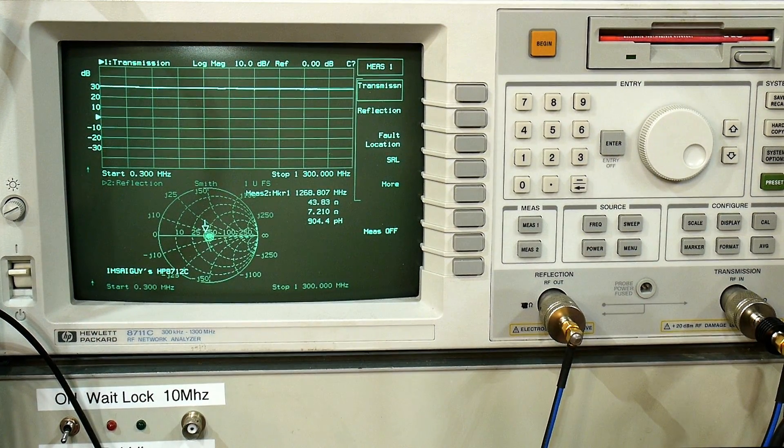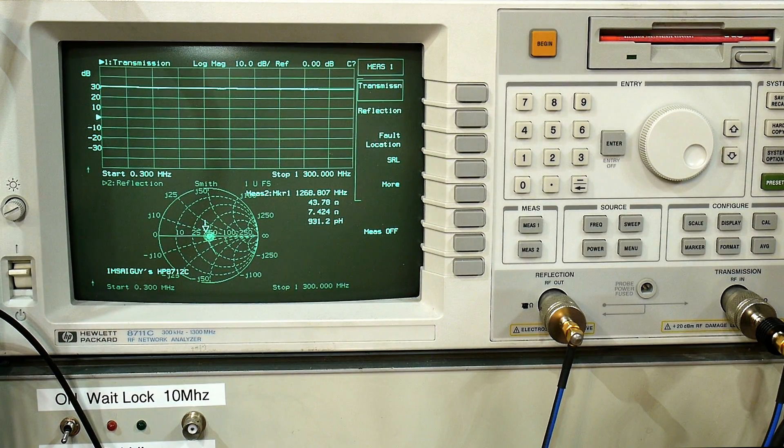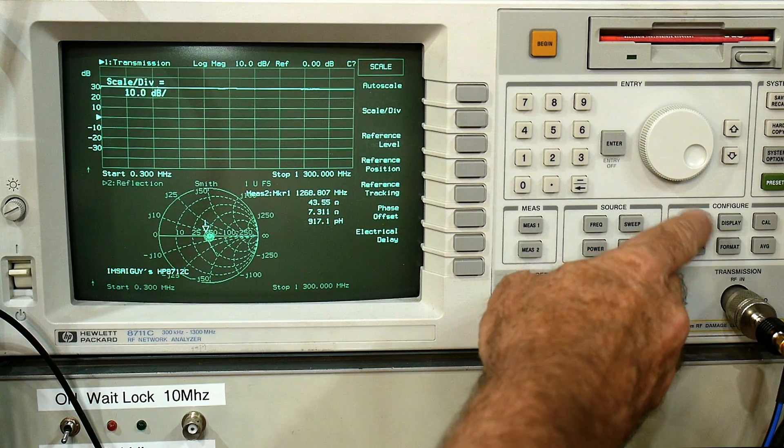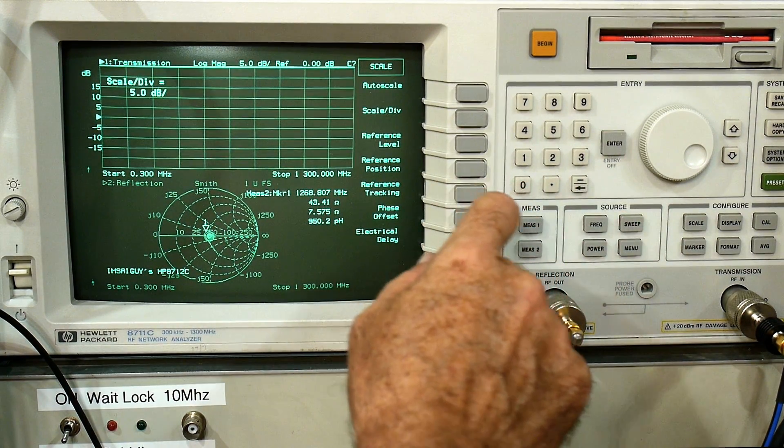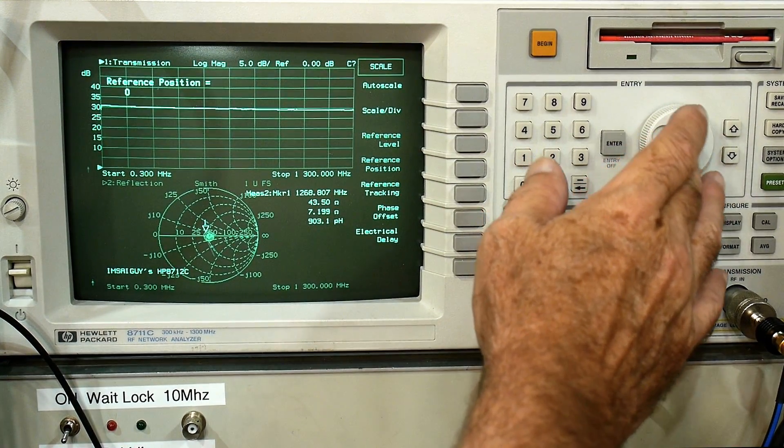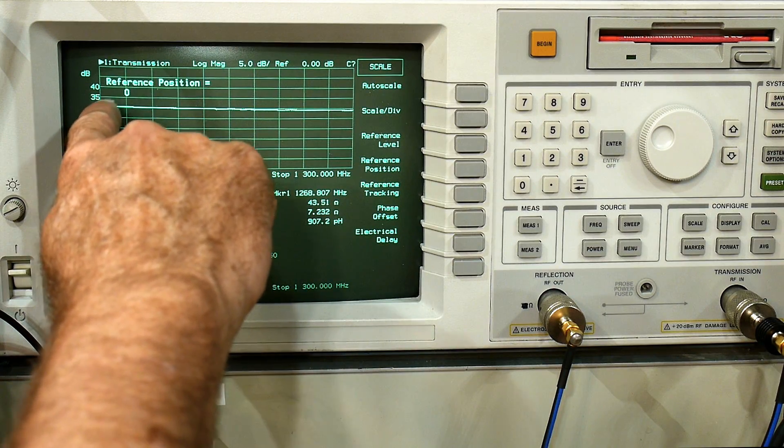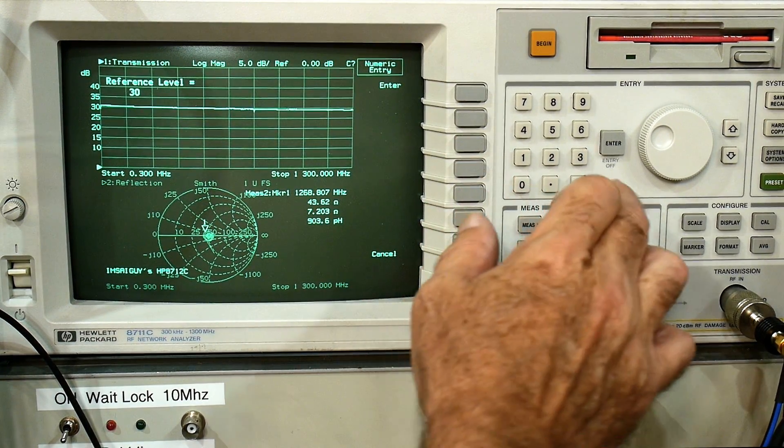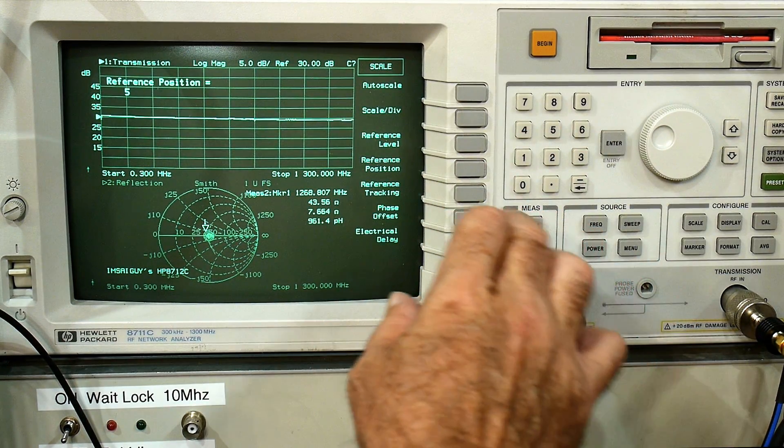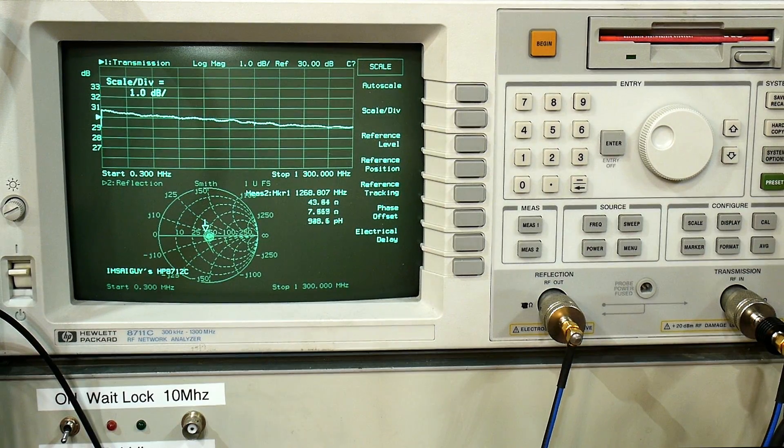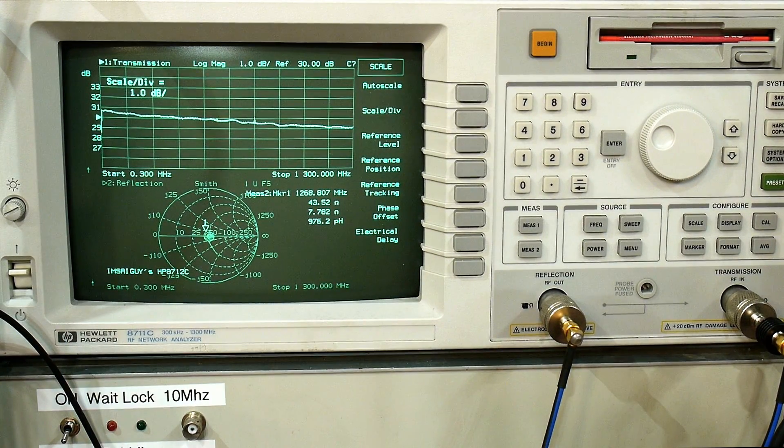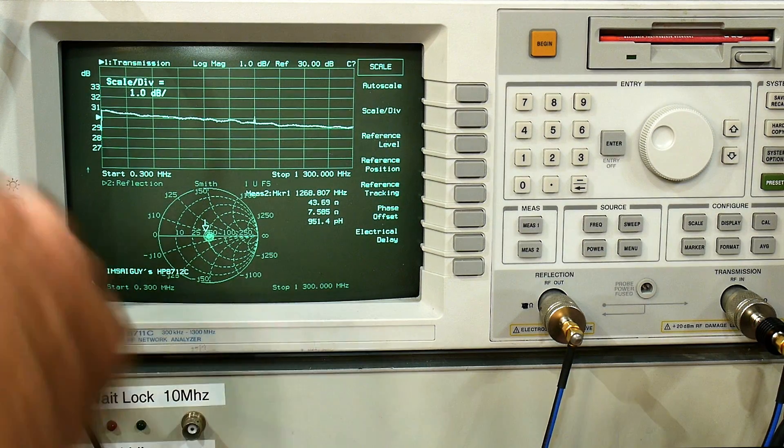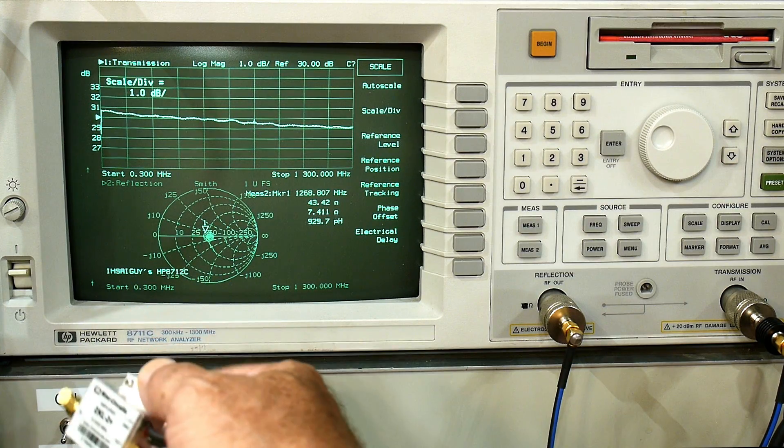Let's go back to measurement one and we are getting 30 dB out. So it is a 30 dB amplifier. Let's change the scale here to be a little bit nicer. Pretty much 30 all across. Let's do reference level of 30, reference position of five, and scale per division of one. Yeah, it's certainly within a dB and pretty flat, not many wiggles in it. Looks really really nice.